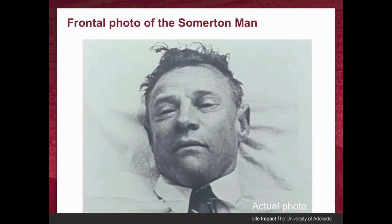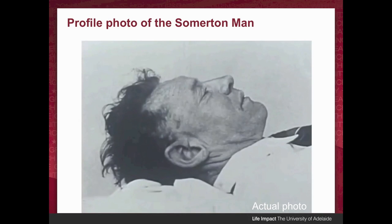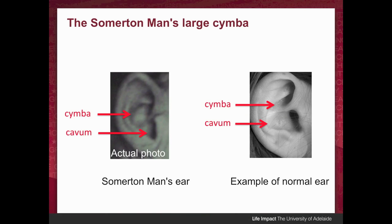This is the frontal photograph Jimmy Durham took, and this is the side photo of the man after the autopsy. Something interesting from the side photo is that the Somerton man's ear is rather unusual. I noticed this around 2009 — the ear looked strange but I didn't know how to describe it. I saw an ear anatomist and he explained that the Cymba, which is the upper hollow of the ear, is much larger than the Cavum, which is the lower hollow. In a normal person the Cymba is very narrow and the Cavum is wider — so this is an interesting feature that can be used for identification.